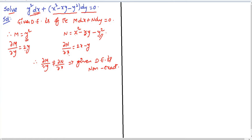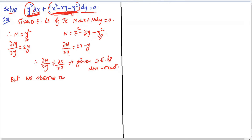We must make the non-exact equation exact by multiplying with an integrating factor. Observing the structure: in M we have a second-degree term, and in N we also have only second-degree terms. Therefore the given differential equation is homogeneous, since the degree of variables throughout the entire equation is the same.